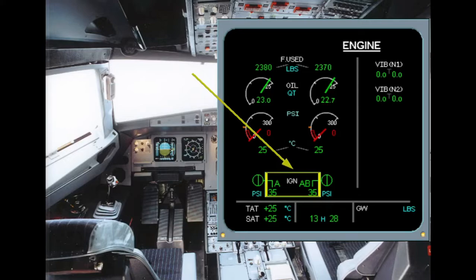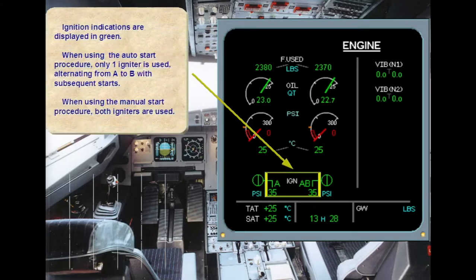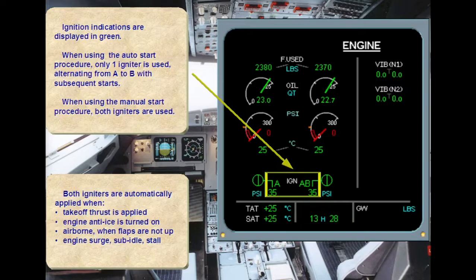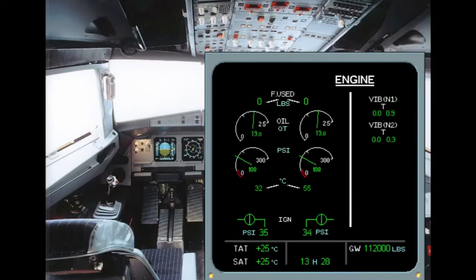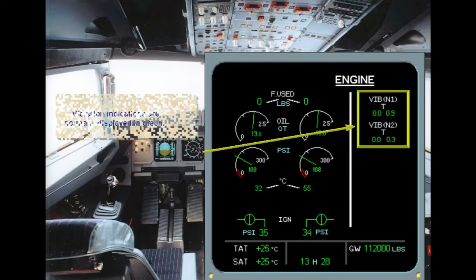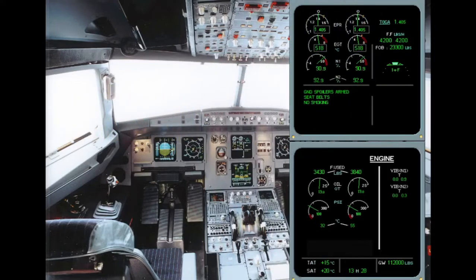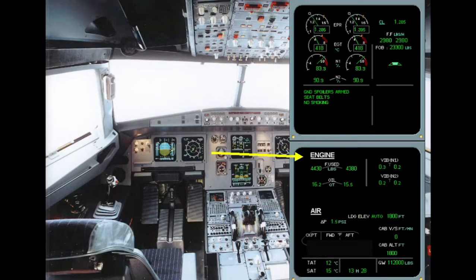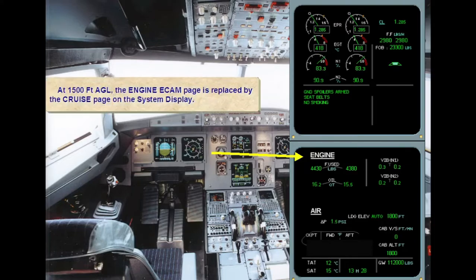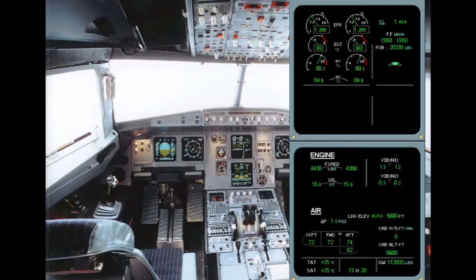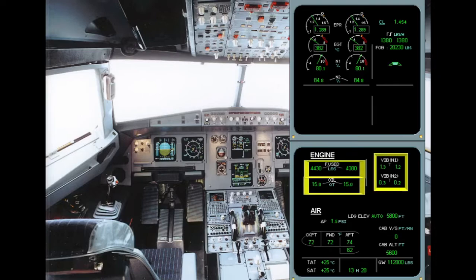Both igniters are automatically applied when takeoff thrust is applied, engine anti-ice is turned on, airborne when flaps are not up, engine surge, sub-idle, or stall. Vibration indications are normally displayed in green. At 1500 feet AGL, the engine ECAM page is replaced by the cruise page on the system display. The cruise page displays the fuel used for each engine, the oil quantity for each engine, and the vibration level for N1 and N2.